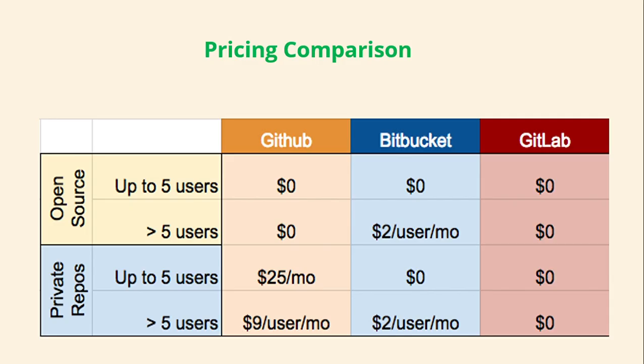Looking at pricing: for up to five users, GitHub and Bitbucket are free, and GitLab is also free. For open source projects, Bitbucket charges $2 per user per month while GitLab is free. For private repositories with up to five users, GitHub charges $25 per month, while Bitbucket and GitLab are both free. For more than five users, GitHub charges $9 per month, Bitbucket charges $2 per month, and GitLab remains free.